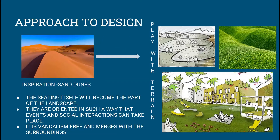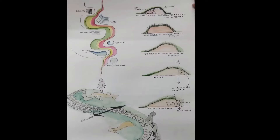Our aim is to make functional use of landscape. The seating itself becomes part of the landscape, oriented in such a way that events and social interactions can take place. This is vandalism-free and merges with the surroundings. The mound is a combination of fill, clay, and topsoil, shaped so the user can sit comfortably. Extra stone seating has been provided behind some mounds for aged and physically handicapped people.